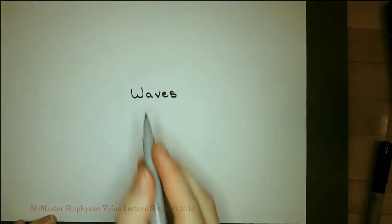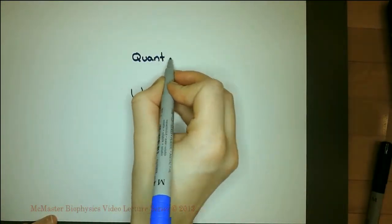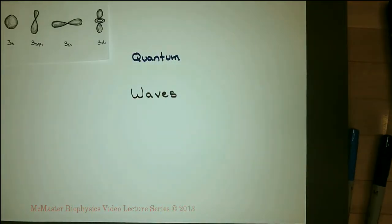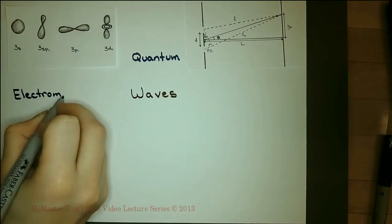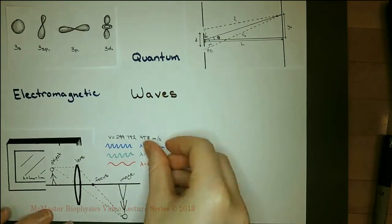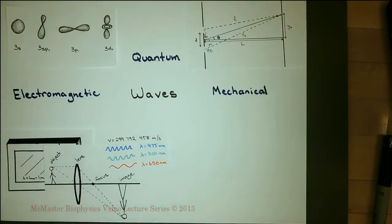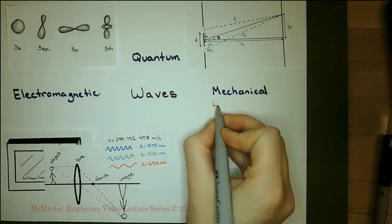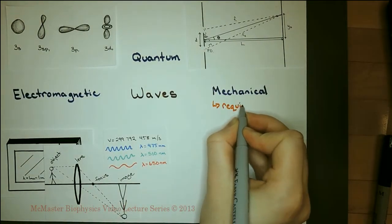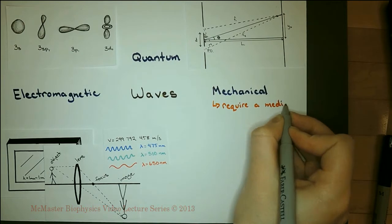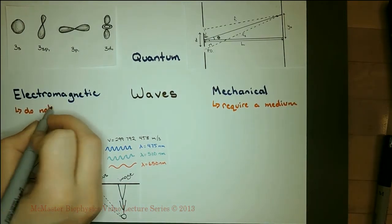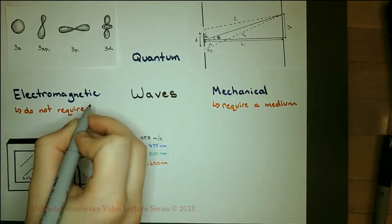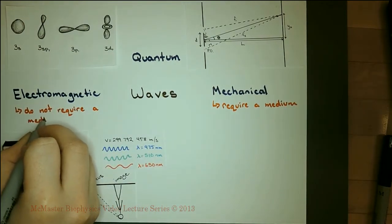There are three main types of waves: quantum waves, electromagnetic waves, and mechanical waves. Mechanical waves require a medium, such as water or air. Electromagnetic waves do not.